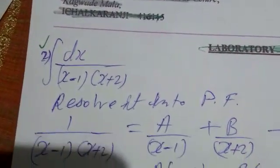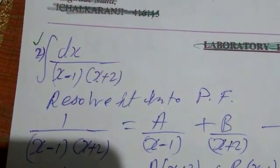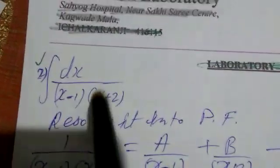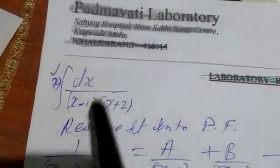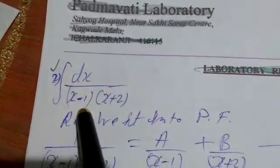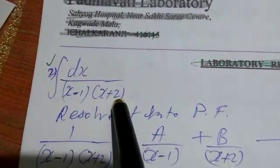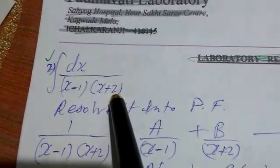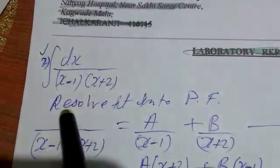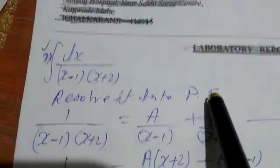Today, we are going to do integration by the partial fraction method. First problem: integration of dx upon (x minus 1) into (x plus 2). This is the problem given. First, we have to resolve this into partial fractions.